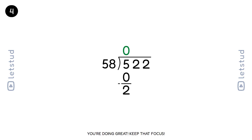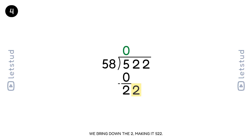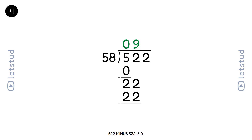You're doing great, keep that focus. Let's bring down the next digit, 2, making it 522. 58 fits into 522 nine times. 58 times 9 is 522. 522 minus 522 is 0.